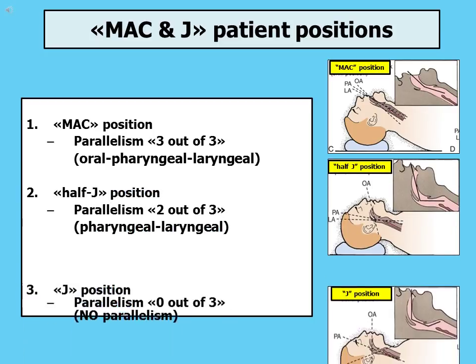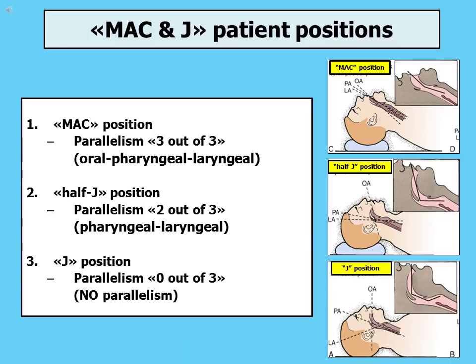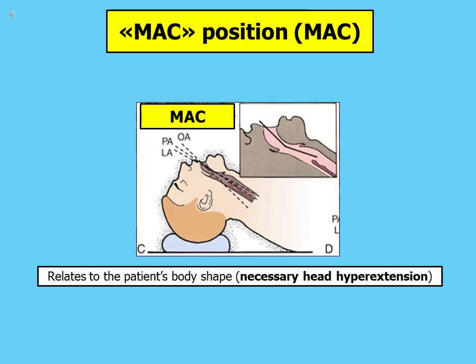There are three possible patient positions: the MAC position, the half-J position, and the J position. In MAC position, all three anatomical axes — oral, pharyngeal, and laryngeal — tend to be parallel: three out of three. In half-J position, only two anatomical axes — pharyngeal and laryngeal — tend to be parallel: two out of three.